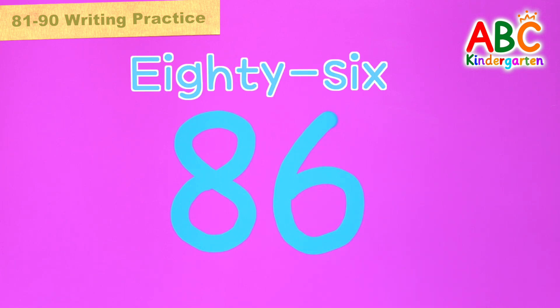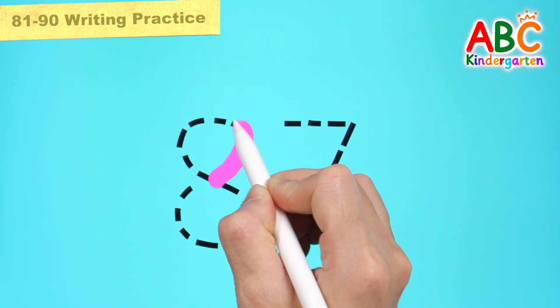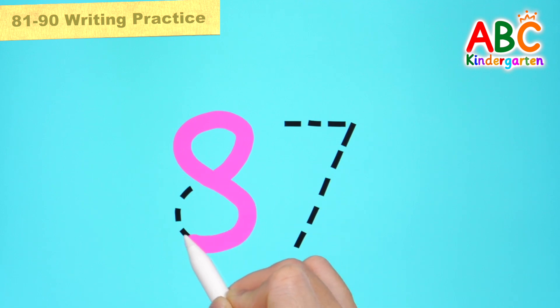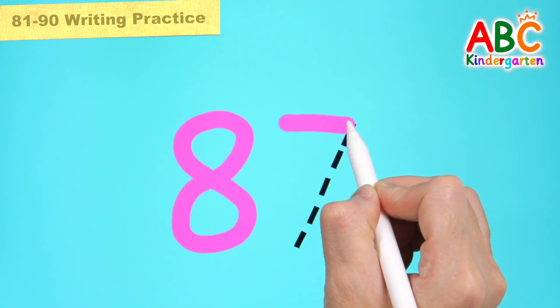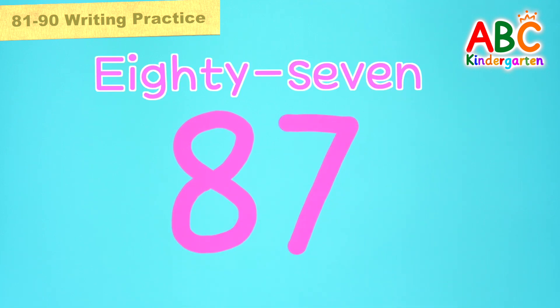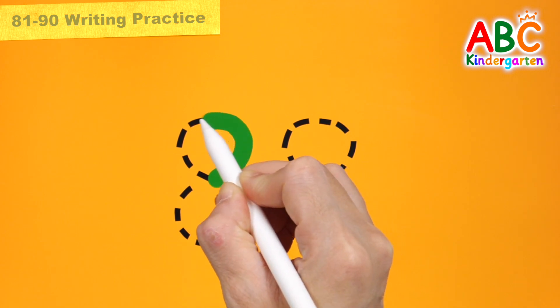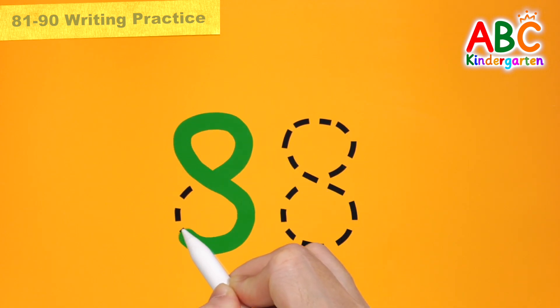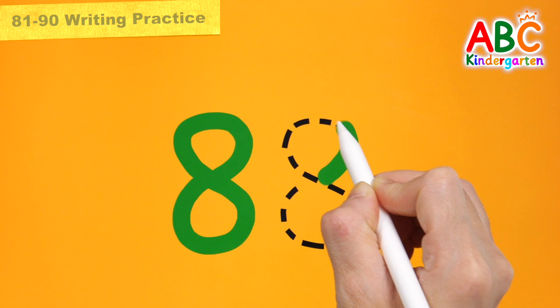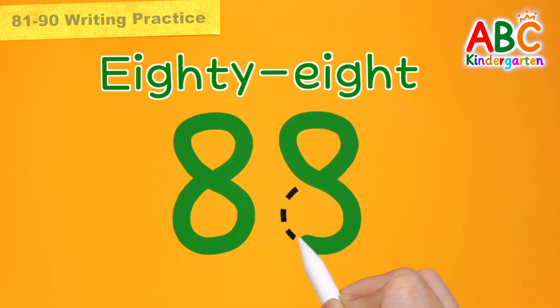86. Write 87 in pink on blue. 87. Write 88 in green on orange. 88.